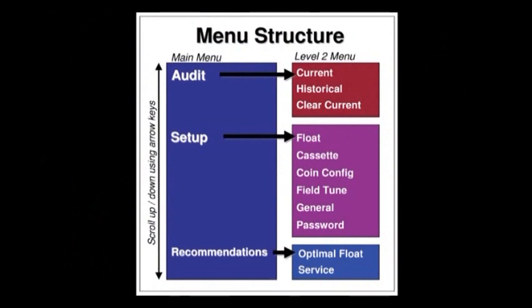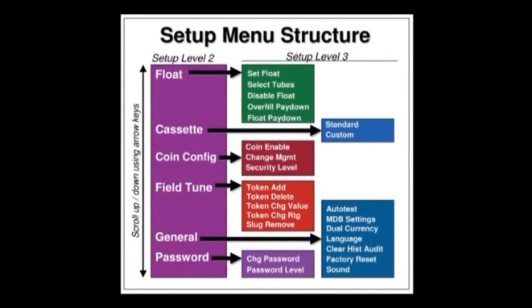Pressing the menu button on the keypad will get you into the menu structure of the Guardian coin changer. First, you'll see audit displayed. Using the E button, you can scroll up through recommendations or setup. Once you're in setup, if you press C for enter, you can get into the expanded setup menu structure, which would be float mode, cassette, coin config, field tune, general, and password settings. Each one of these menus can be broken down further as shown in this diagram.